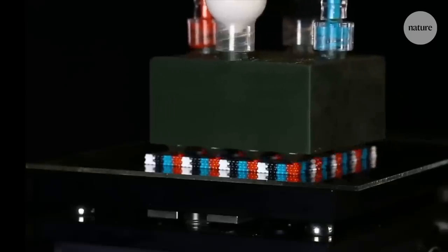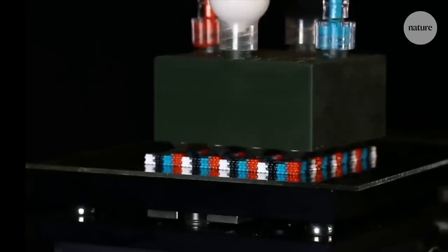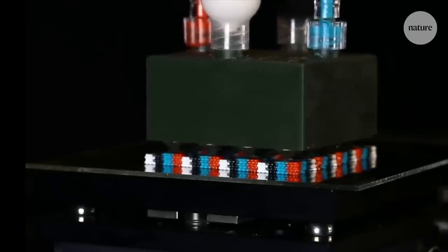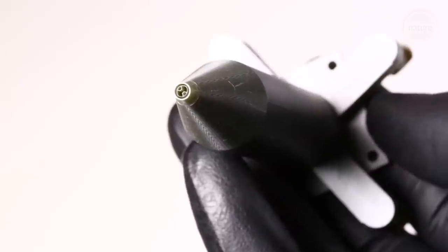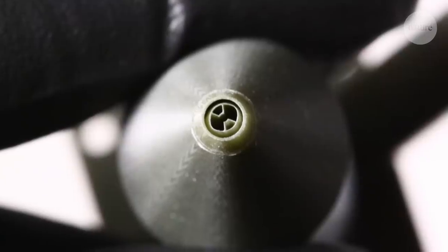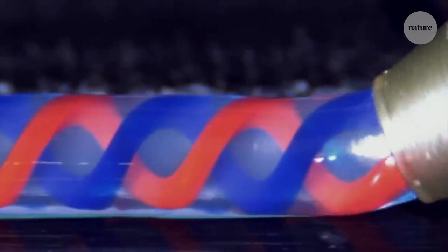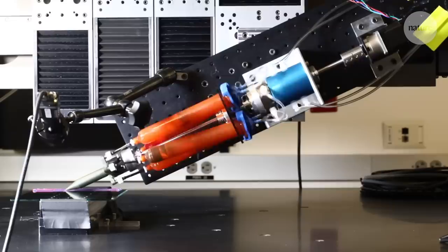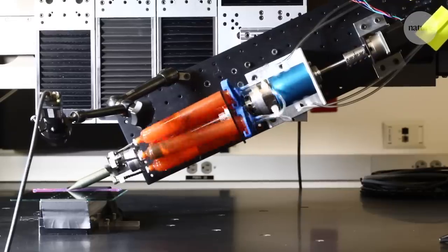3D printers can already print with multiple different materials called inks at once, for example using nozzles like this one. But this new design adds rotation, turning both the nozzle and ink barrels, allowing it to make things like helices.